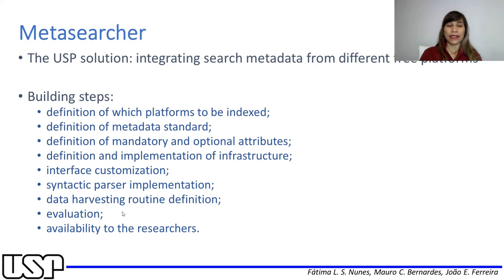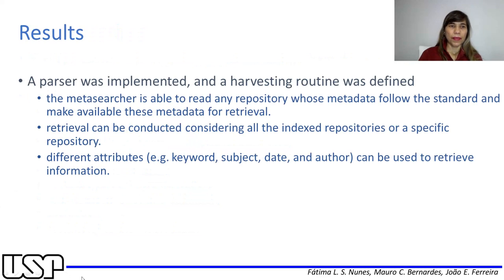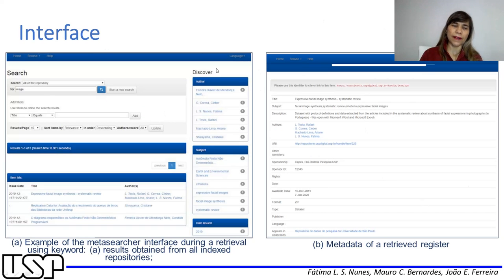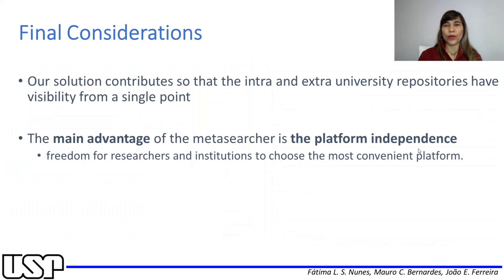We did an evaluation and made this meta-search available for users. As a result, the meta-search is able to read any repository among predefined ones. Different attributes such as keyword subjects can be used to retrieve information. This is the interface screen used to make a search, and this is the result of a record in the interface. We concluded that our solution contributes so that intra and extra university repositories have visibility from a single point, and the main advantage of the meta-search is platform independence.